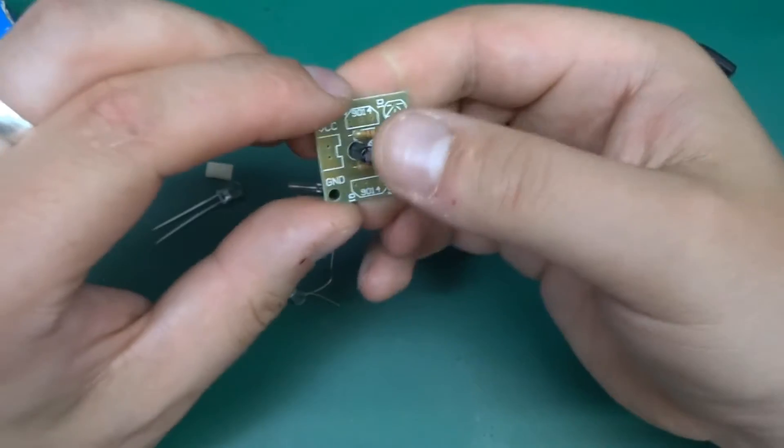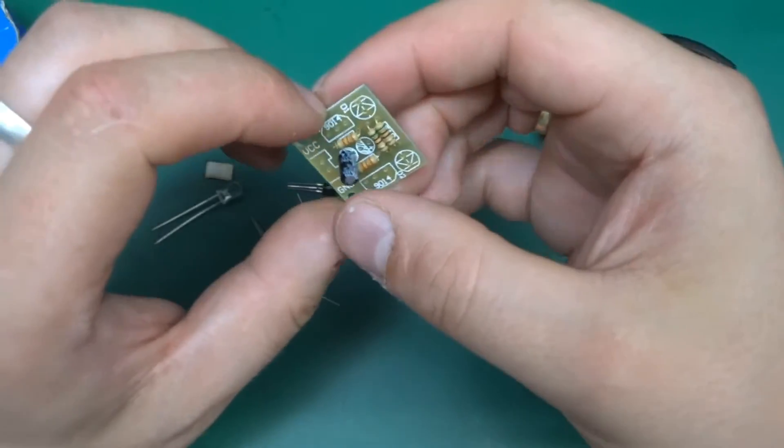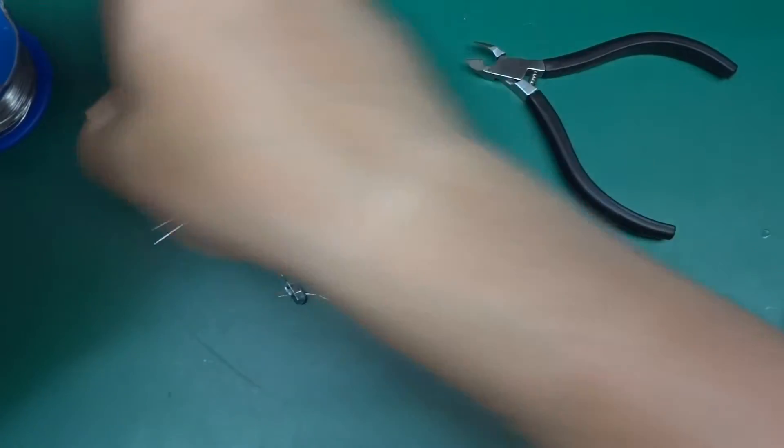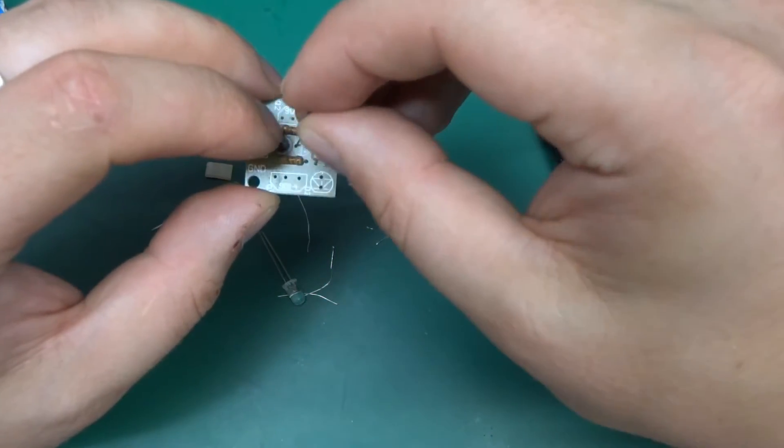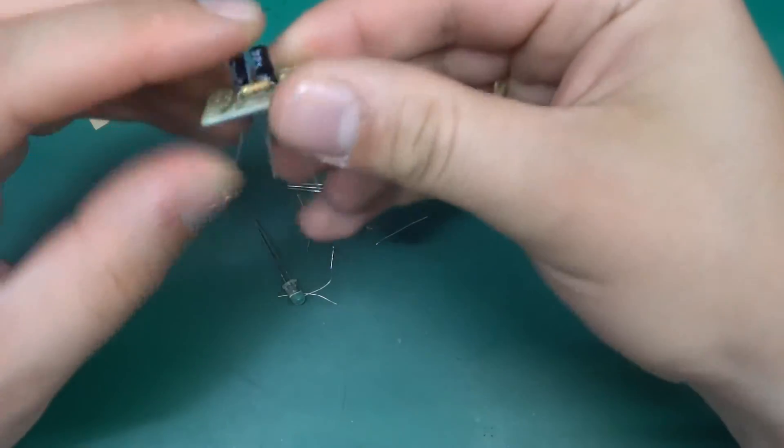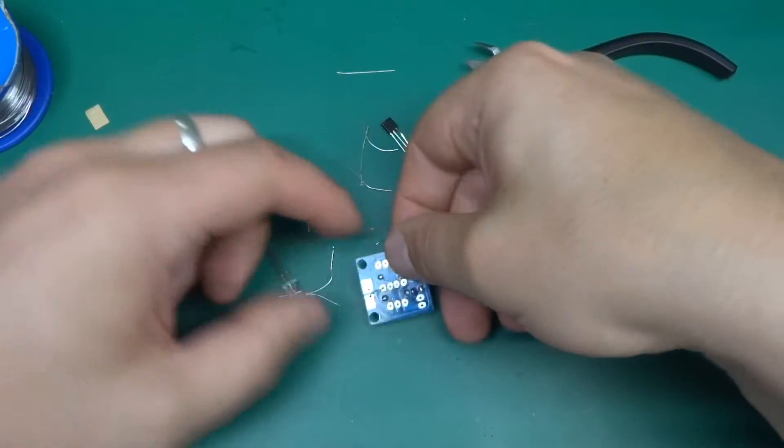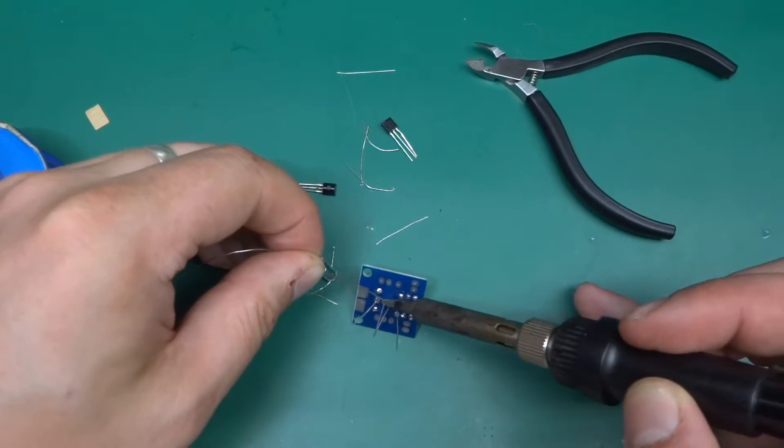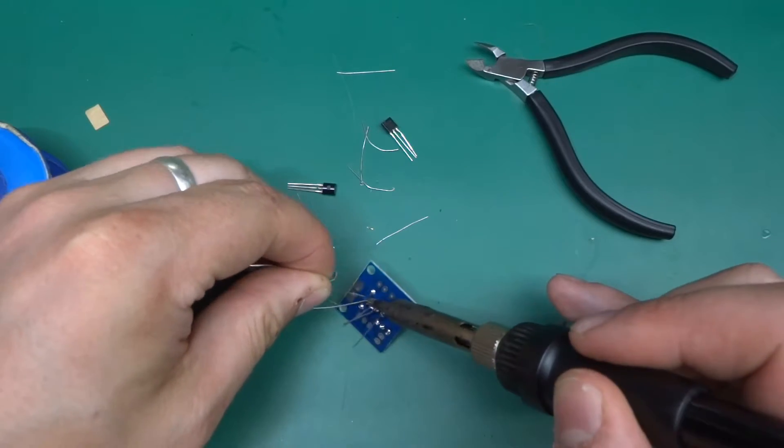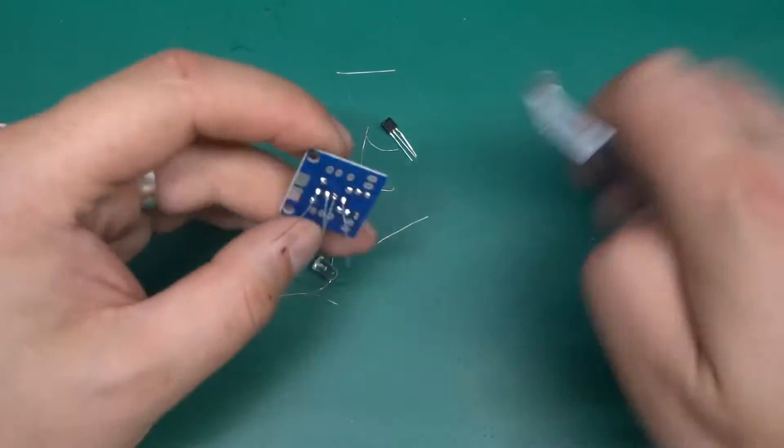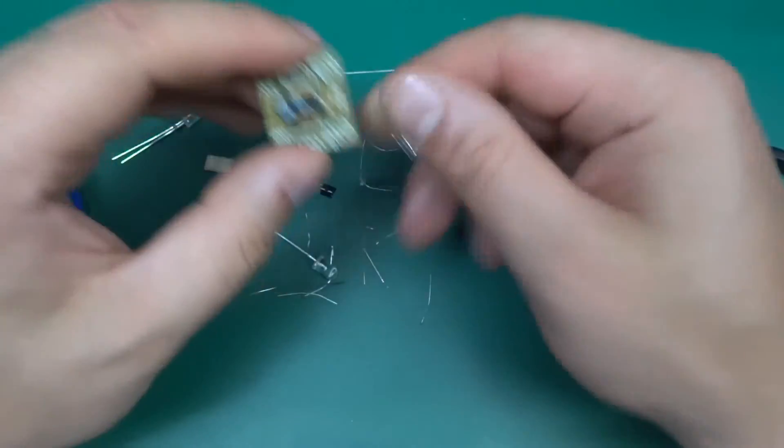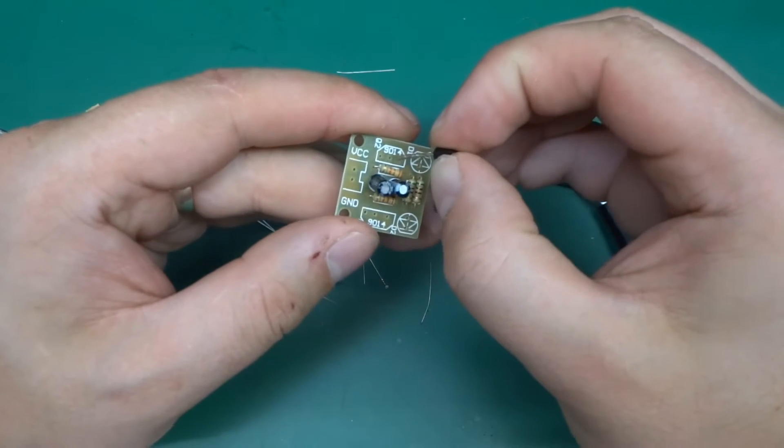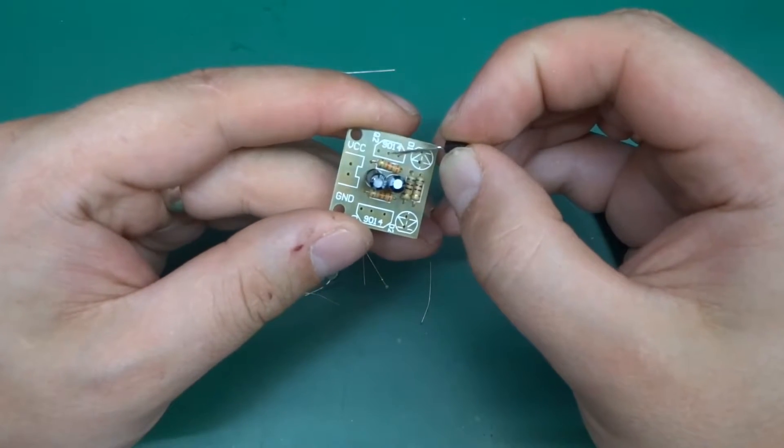The electrolytic caps go in. Bear in mind the markings on those because they're polarized. The longer leg goes into the positive, or the white silk screen side goes where the negative is. And the second one goes like so.